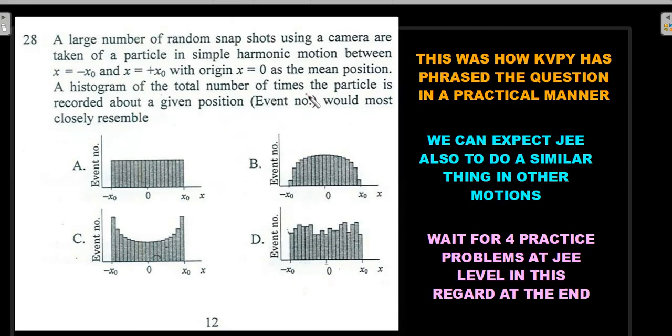So you could see that the person is taking random snapshots between minus a to plus a, and a histogram or a bar graph is drawn for the number of events that have been captured. Most possible event would be—that means he's asking about the probability distribution indirectly here. He's not using that word, but in a clever manner, in a practical manner, he's enticing students to answer this question. And obviously you should have gone for the option C based on what we did in our calculation.